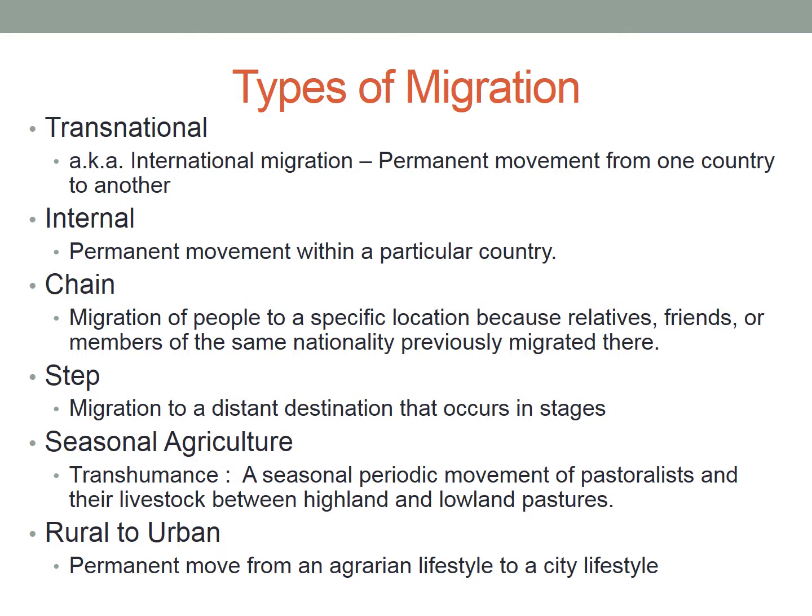Another type is transhumance, a seasonal periodic movement of pastoralists and their livestock between highland and lowland pastures. Transhumance is different from typical nomadism because pastoralists take up long periods of residence in a new location. In Switzerland, for example, herders move up into the highlands during summer when those areas become accessible. In the Horn of Africa, hundreds of thousands of pastoralists and their livestock follow seasonal rainfall patterns and new grazing grounds.